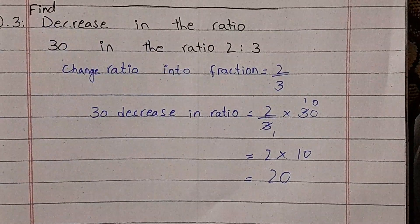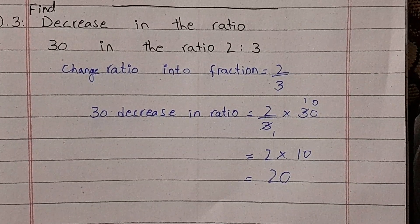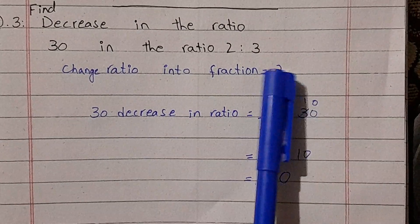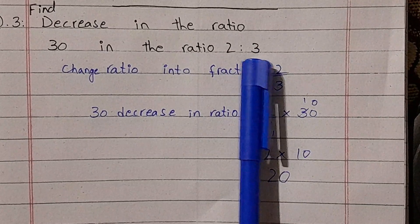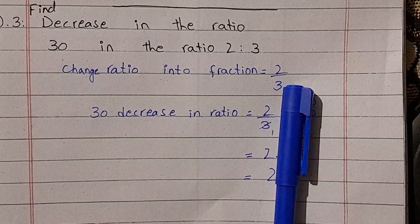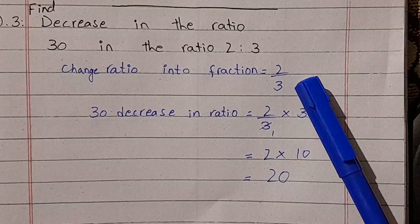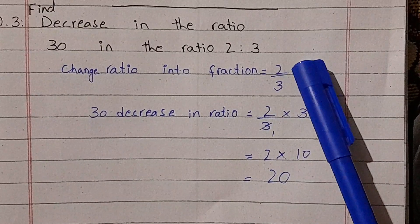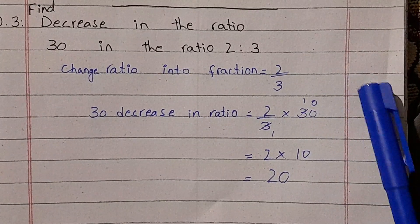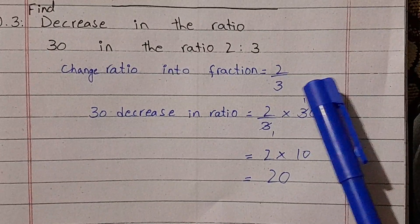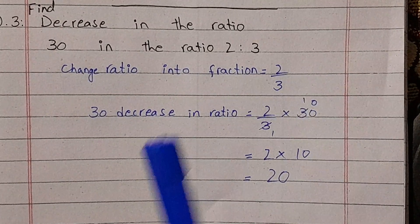In question number 3, we have to find decrease in the ratio. Increase and decrease in the ratio use the same method — there is only one basic difference. When we convert the ratio into a fraction, in decrease in the ratio, it becomes a proper fraction, where the numerator is smaller than the denominator. In increase in ratio, it is the inverse — the denominator is smaller, making it an improper fraction.